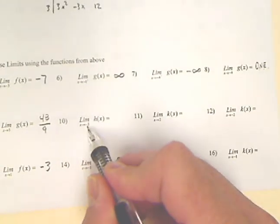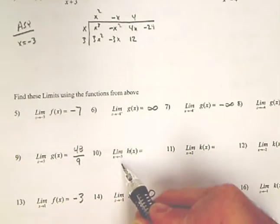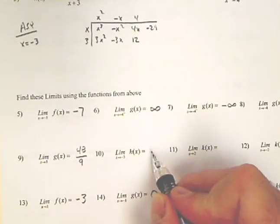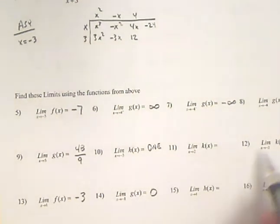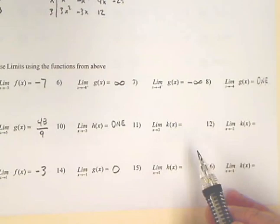We go down below and we find the limits for the h's. 10 says find the limit as x approaches negative 3. Negative 3 is the asymptote we just found. And the limit at an asymptote does not exist. That was friendly.